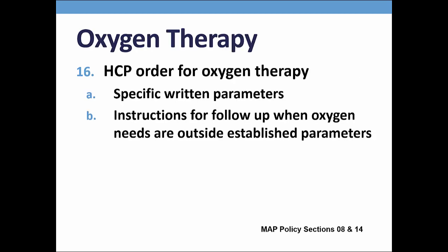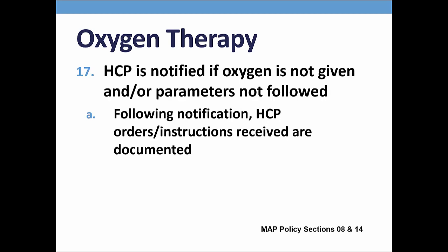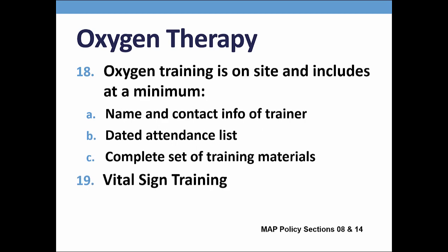Oxygen is a schedule 6 medication, so all MAP policies regarding medication apply. The HCP order should include parameters and what staff are to do when the reading is outside of the parameter. The HCP must be contacted if the oxygen is not administered as ordered or the parameter is not followed. Following notification, the instructions received are followed and documented. Training guidelines are located in the MAP policy manual. The vendor who supplies the equipment will many times provide the staff training. If someone in your program is receiving oxygen, I will ask to see supporting training documentation.